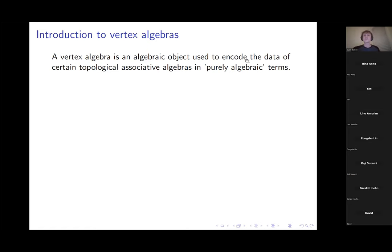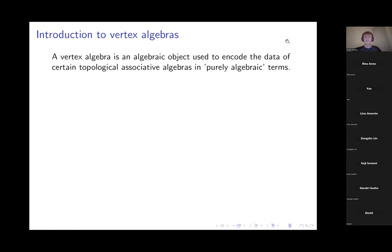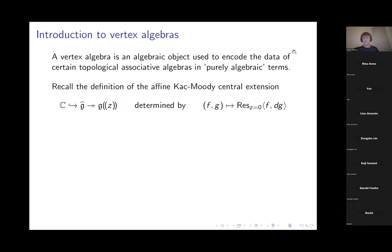If you have a topological associative algebra and want to study things related to its topology without continually referring back to analysis, it's possible — if the topology is sufficiently structured — to encode various topological conditions in terms of some explicit intricate algebraic conditions. That's the nature of what a vertex algebra is.